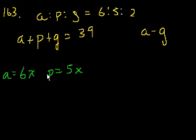So if you did 6x over 5x, you'd get 6 to 5. And by the same logic, then the grapes would be 2 times that same number x. And all the ratios would work out.